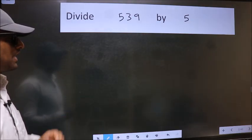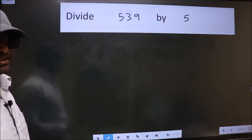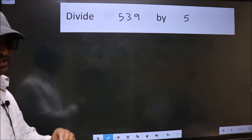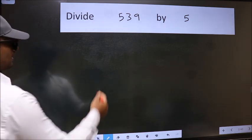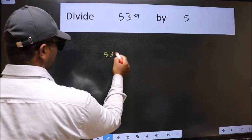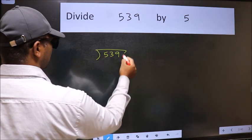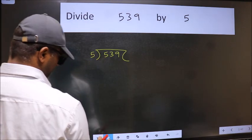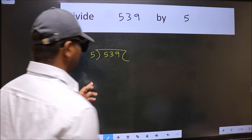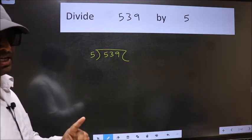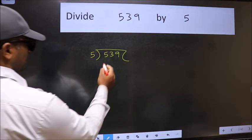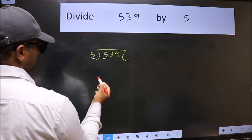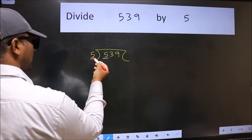Divide 539 by 5. To do this division, we should frame it in this way: 539 here and 5 here. This is your step one. Next, here we have 5 and here also 5. When do we get 5? In the 5 table, 5 once is 5.